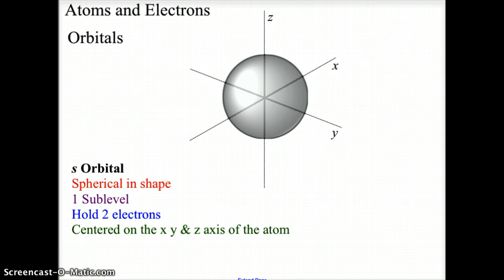The orbitals, these clouds in the quantum model are shaped in a three dimension and the first orbital is always the S orbital and it is spherical in shape. Therefore, it's centralized around the X, Y, and Z axis of the nucleus and the S orbitals always have one sublevel holding two electrons.